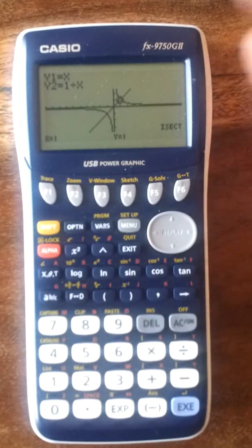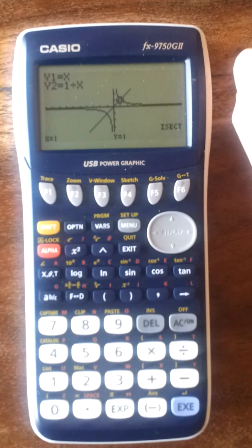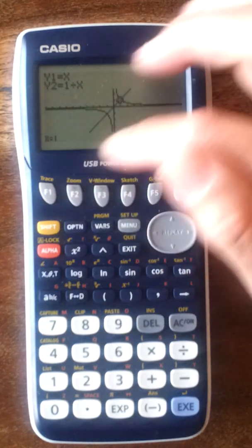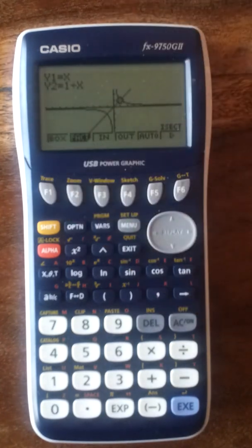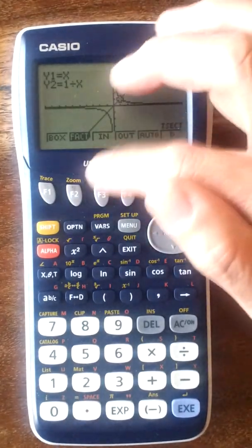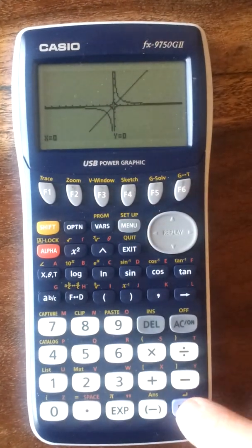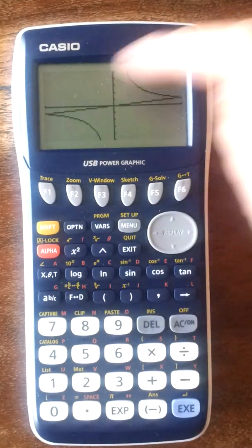You can just fiddle about with some of these and try some different graphs and have a look at them, and try solving different ones and using the G-solve for different ones. If you want to zoom in, one last tip is you press F2, which is zoom. F2. And then zoom in, you press in and execute. And it moves right on.